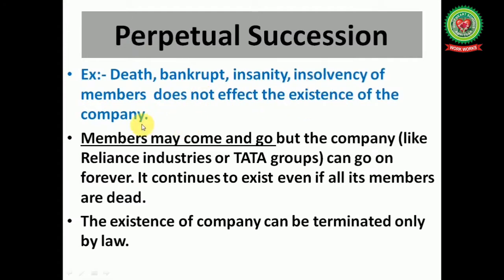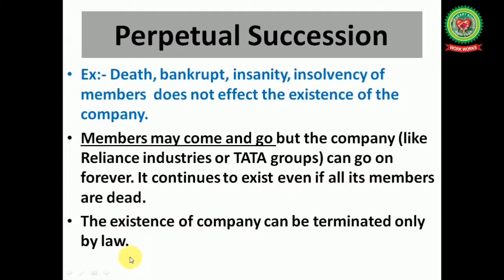Next is perpetual succession. For example, death, bankruptcy, insanity, or insolvency of members does not affect the existence of the company. Members may come and go but the company can go on forever — it continues to exist even if all its members are dead. The existence of a company can be terminated only by law.